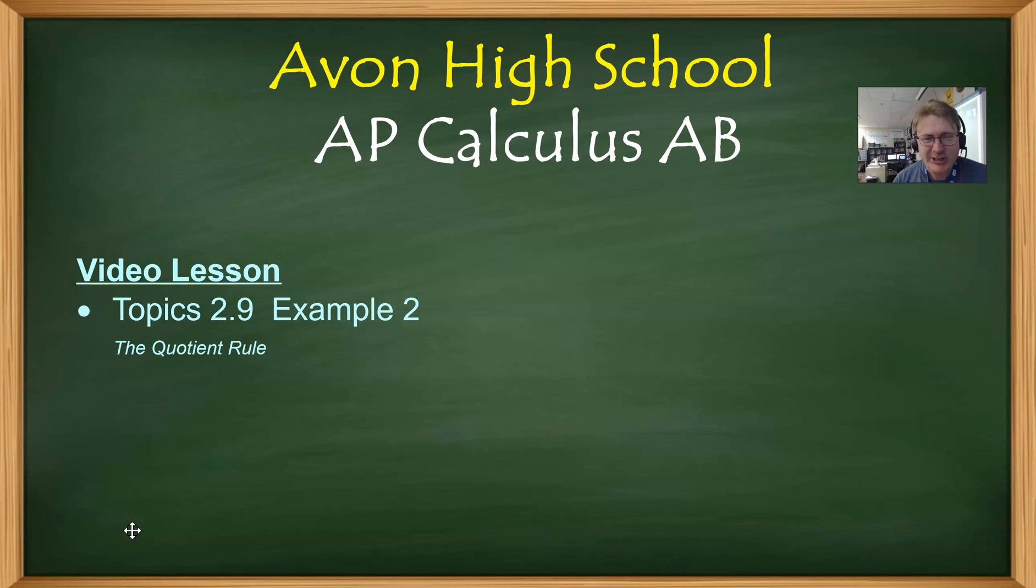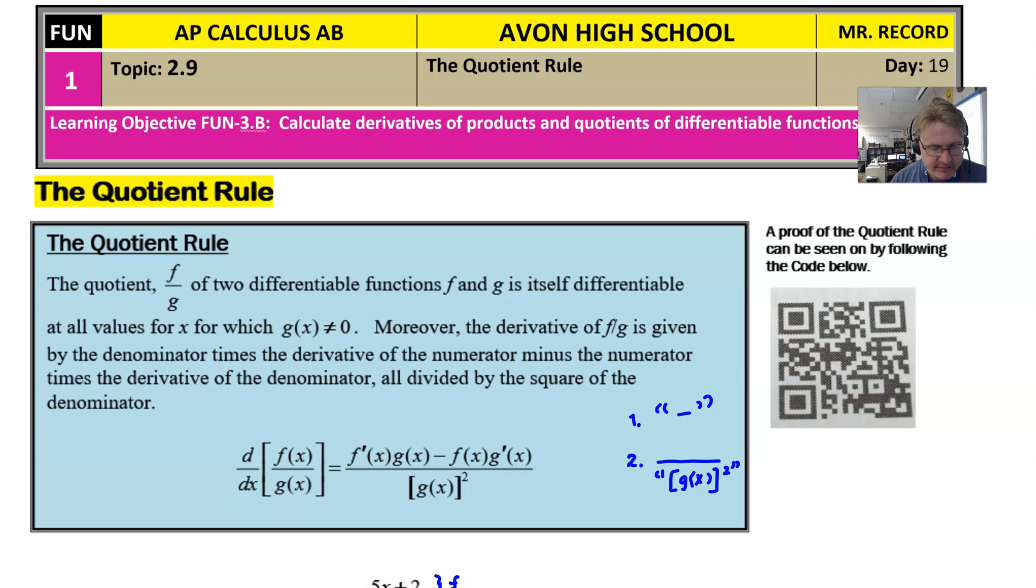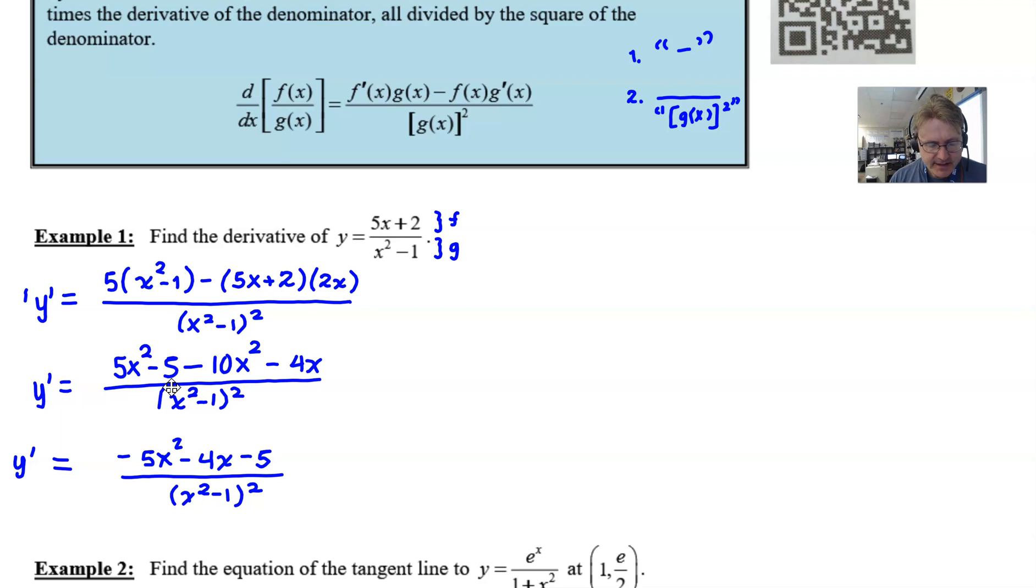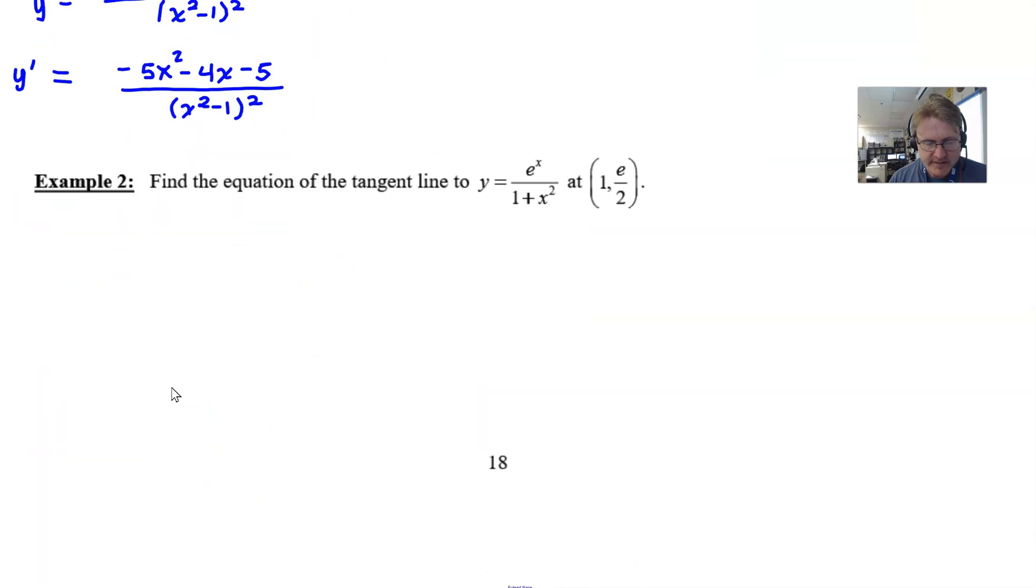Hello AP Calculus AB students. We're going to take a look at example 2 from our topic 2.9, dealing with once again the quotient rule. If you joined us in the first video, we ran through the solution of example 1, which is a pretty straightforward application. And we're going to now follow up with this wonderful example 2, which has just got a few extra components to it.